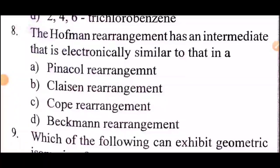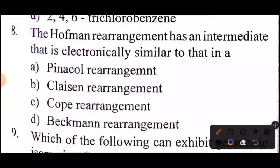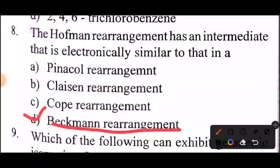Question 8: the Hofmann Rearrangement has an intermediate that is electronically similar to that in a nitrene.